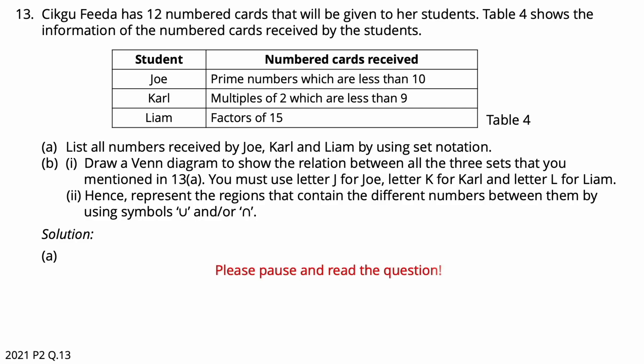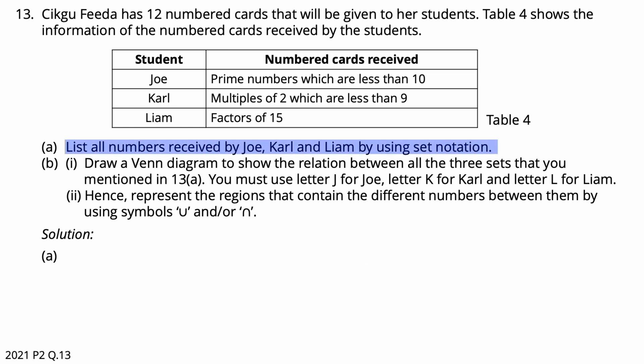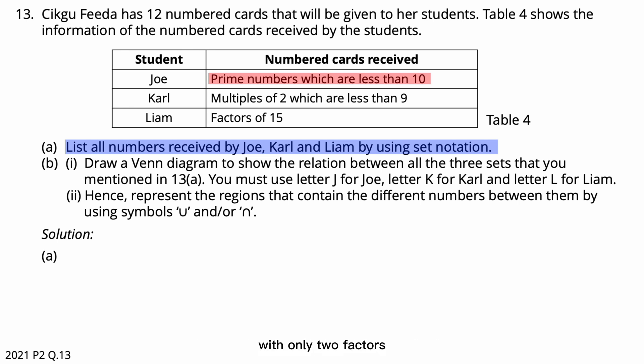Question 13. Express all numbers received by Joey, Carl, and Liam using set notation. The number cards received by Joey are prime numbers less than 10. A prime number is a whole number greater than one with only two factors. The set obtained by Joey is {2, 3, 5, 7}.